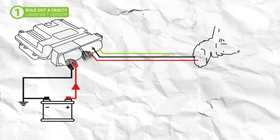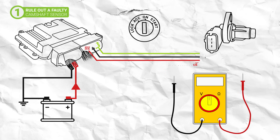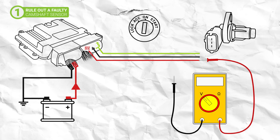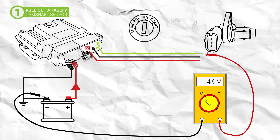To do this, ensure the ignition is off and disconnect the sensor. Then using your vehicle's wiring diagram, identify the connection terminals for the camshaft sensor. Turn the ignition back on and setting your multimeter to volts DC, place the red probe on the 5 volt terminal at the sensor connector and your black probe on the negative side of the battery. Check the reading on the multimeter, which should be 5 volts. Then, keeping the black probe in place, move the red probe to the signal terminal and check the multimeter reading, which should also be 5 volts.